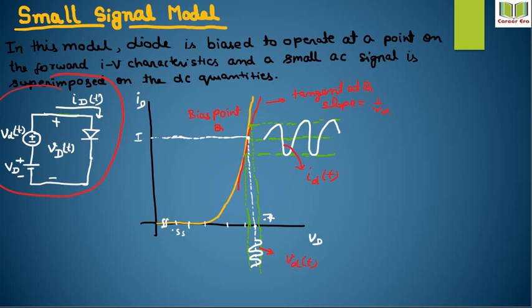Small vd is the AC voltage and capital VD is the DC supply. The overall biasing voltage VDT is the total voltage across the diode, and IDT is the total current.